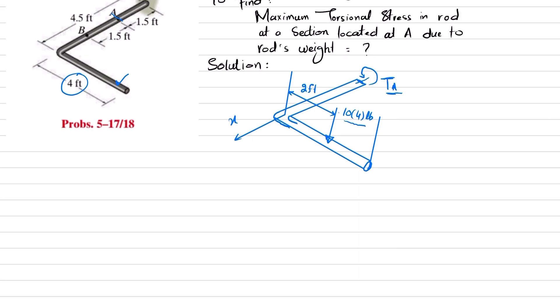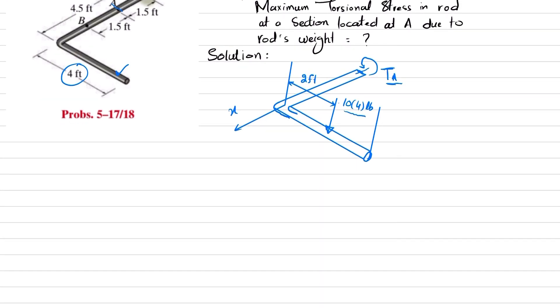How we will find this T_A? We will use equilibrium condition that sum of all moments about point x is equal to zero. So about x, this moment is 10 times 4, and perpendicular distance is 2 feet.